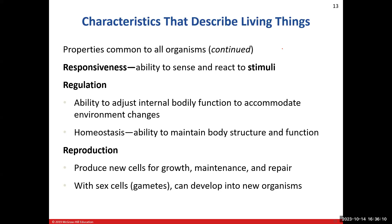Next is responsiveness — the organism's ability to sense a stimulus. A stimulus is a change either in the internal or external environment, for example a change in temperature. Responsiveness is the ability that organism has to sense what that change is and then react to it. If it's a painful stimulus, like touching a hot stove, normally you would pull your hand away — that is your reaction to that painful stimulus. Regulation has to do with the organism's ability to adjust internal bodily function for whatever type of environmental changes are occurring, whether those changes are external or internal to that organism.